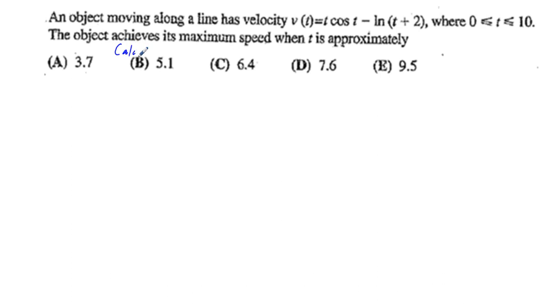Get your calculator out, see if you can solve it, then restart the video and see if you get it right. The object moving along the line has a velocity v(t) = t*cos(t) - ln(t+2), where t is between 0 and 10.